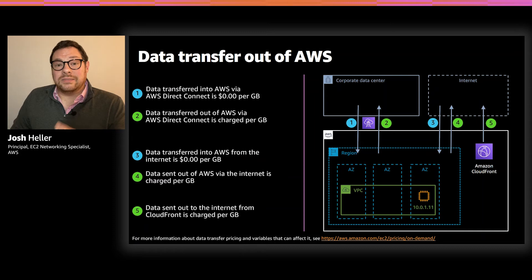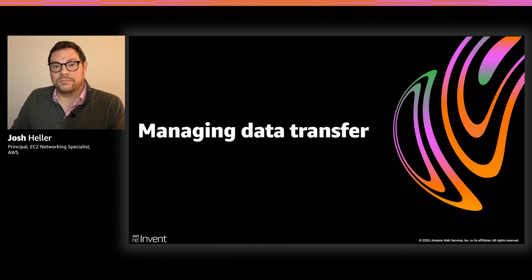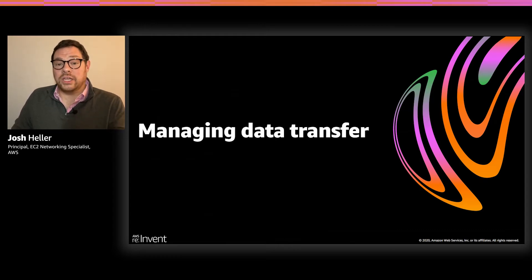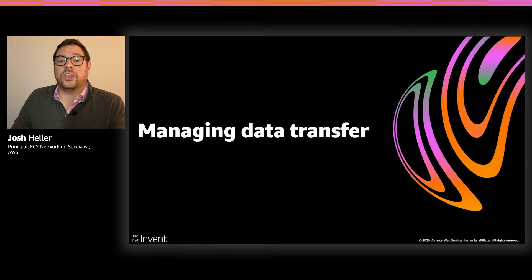Over the last handful of slides, we spent some time understanding the AWS global network and how data transfer fits into our networking building blocks. Managing data transfer in your environment comes down to three areas: first, ways to estimate the cost impact of data transfer on your projects; next, tools available to measure and visualize your data transfer consumption; and finally, tips to optimize data transfer for your workloads.